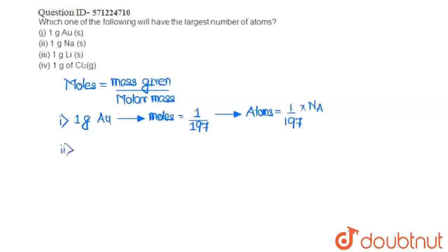Now, for the second option, we have 1 gram sodium. So, 1 gram sodium has total moles as the mass given, 1, divided by the molar mass of sodium, that is 23.